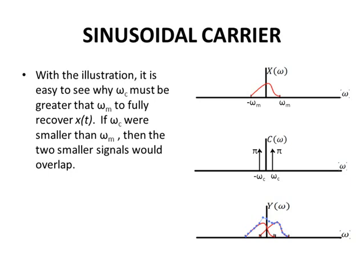In this case, y of omega yields two shifted x of omegas at one half the magnitude. However, the tails of these two x of omegas overlap in the center, yielding a new y of omega.